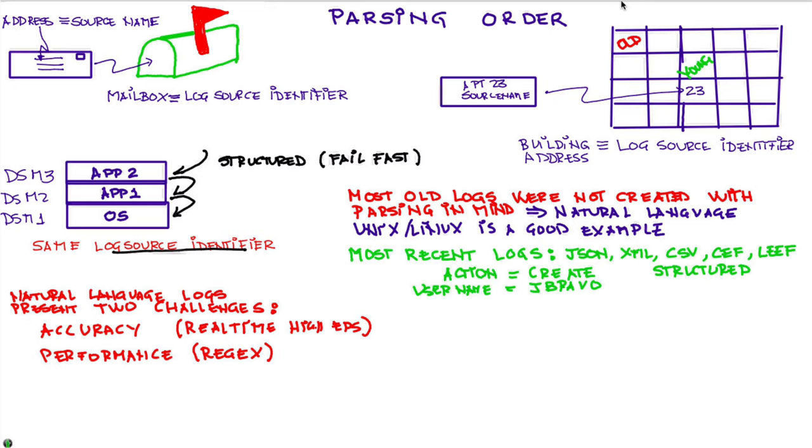If it doesn't find the right type of format, like action, username in the right way, it will fail back. And then it will be passed to the next one. And let's say that one could be the natural language one. I only want to evaluate regex if I have to.